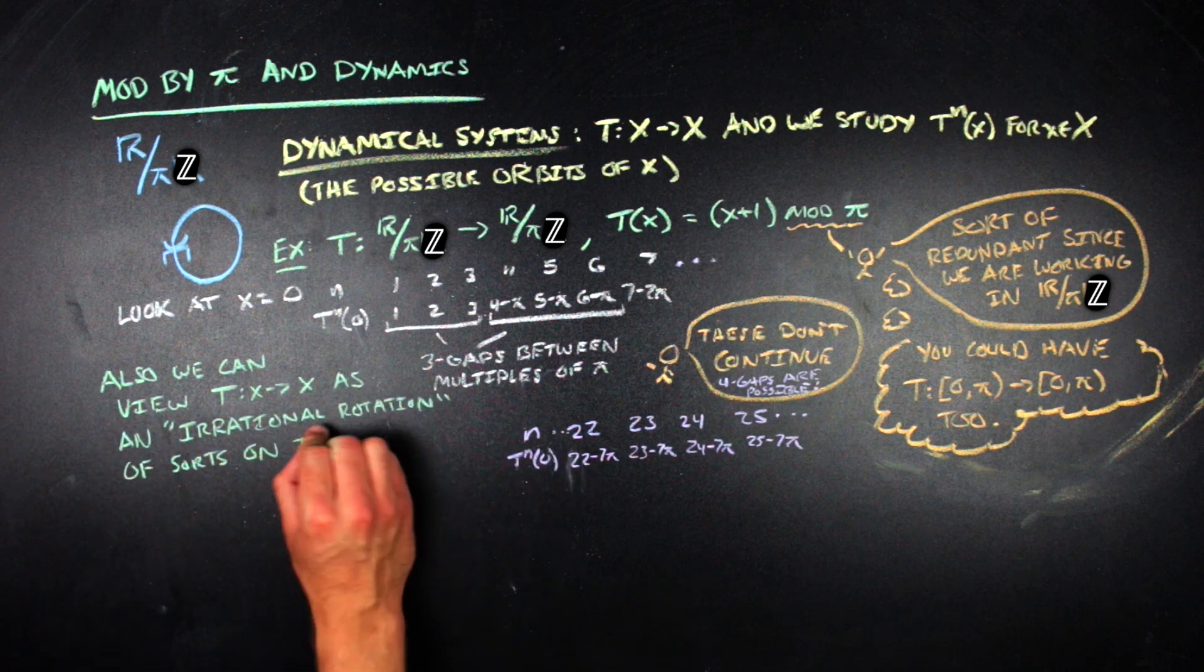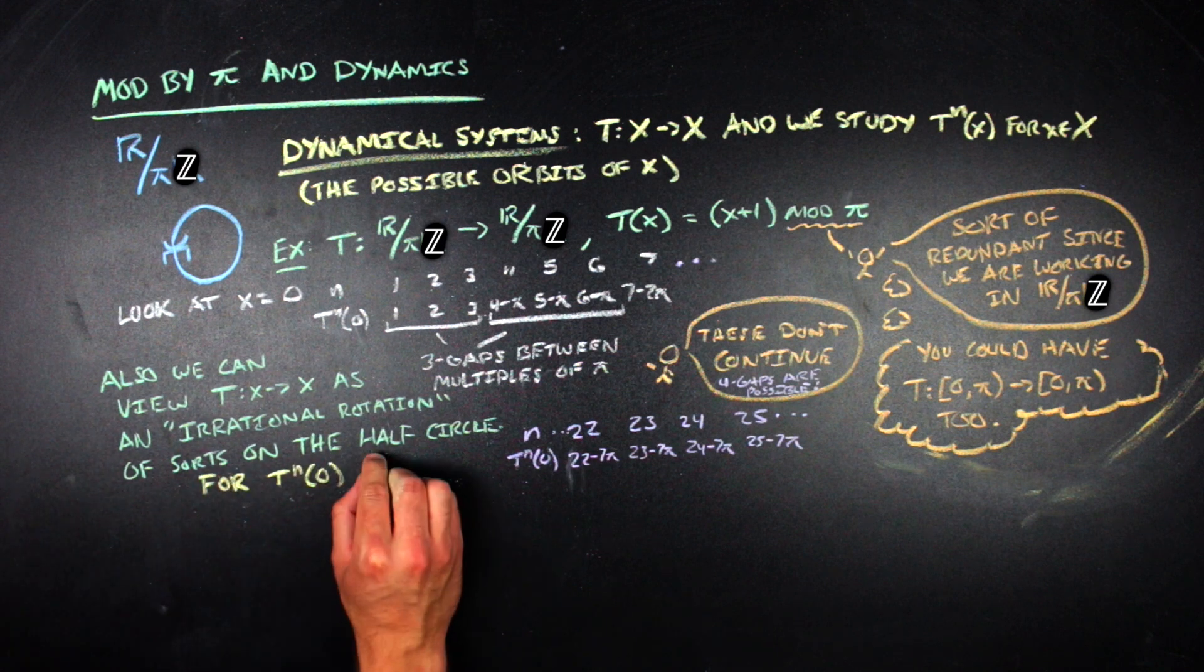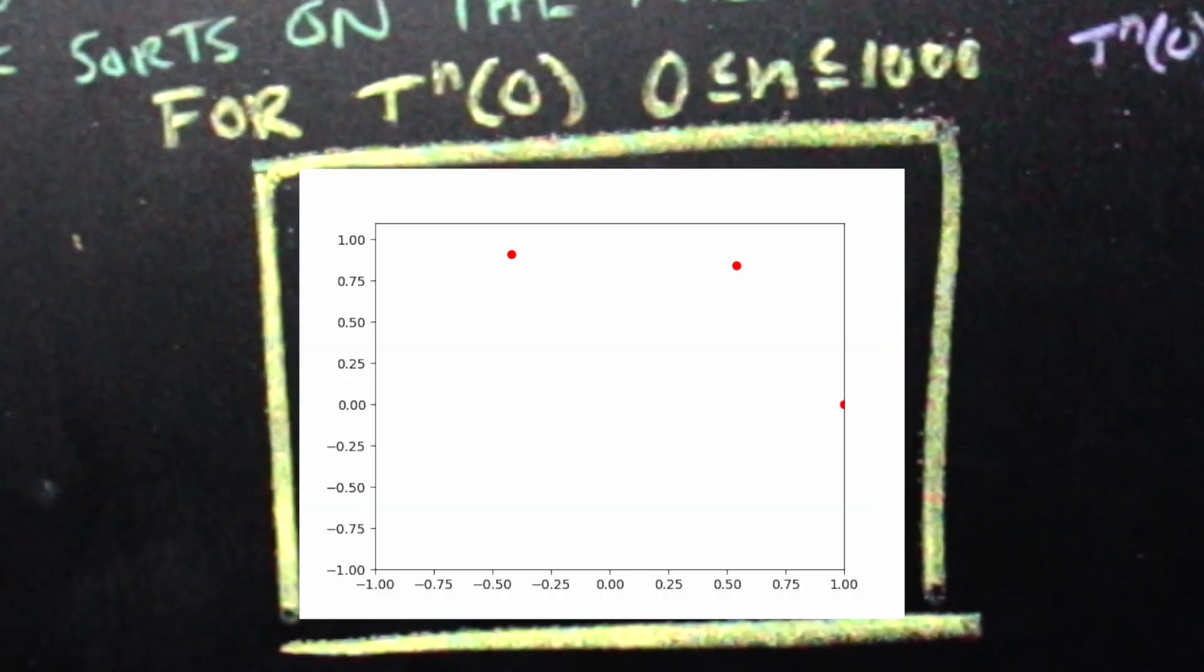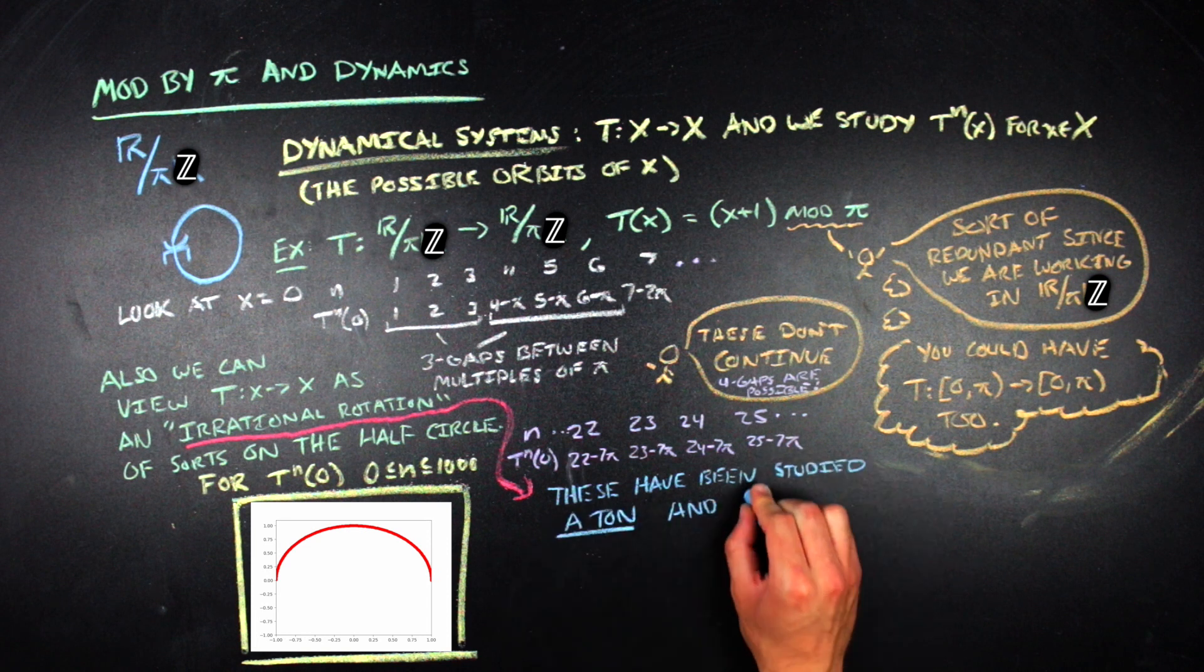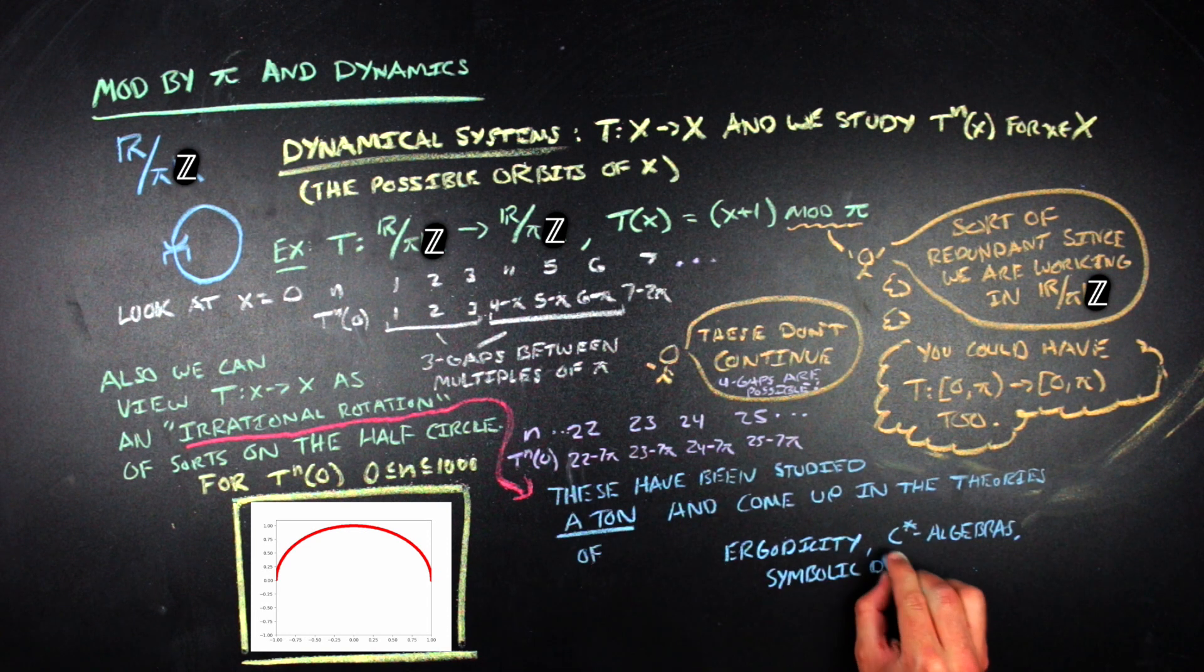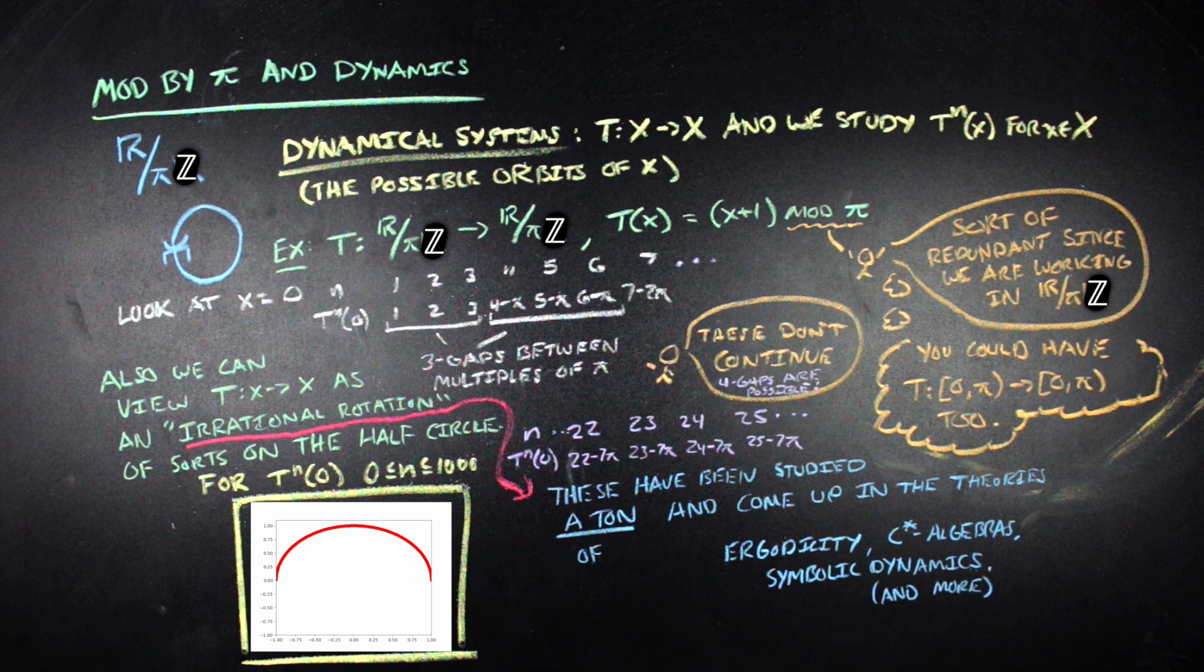The other way that we can think about T is that it's kind of an irrational rotation of sorts on the half circle. And just to give you some visual for what that looks like, I went ahead and programmed a graph that dots out what happens to the first thousand and one, I guess, iterates, if you count the zeroth iterate, to zero with this function. Now, usually irrational rotations are thought of on circles or toruses or other places, but this is just another place that you could think about them. There's a ton of stuff that has been done with irrational rotations in the areas of ergodic theory, C-star algebras, symbolic dynamics, and other dynamical fields. So there's a lot of mathematical interest around modularity that's not just in the world of algebra. And with that, to keep it short, that's where I'm going to end today.